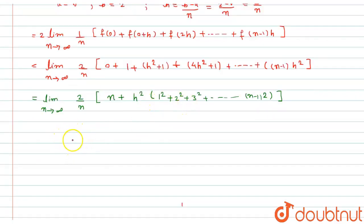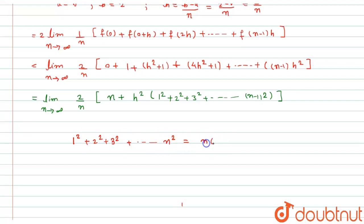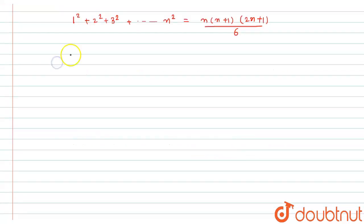As we know the formula: 1 squared plus 2 squared plus natural numbers squared up to n squared equals n(n plus 1)(2n plus 1) divided by 6. According to this formula, the expression will become the limit as n tends to infinity, 2 divided by n, in bracket n plus h squared times (n minus 1)(n)(2n minus 1) divided by 6.